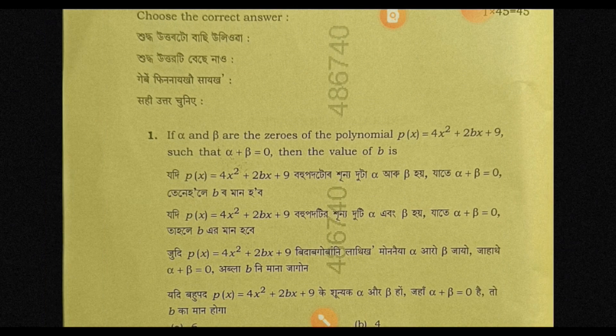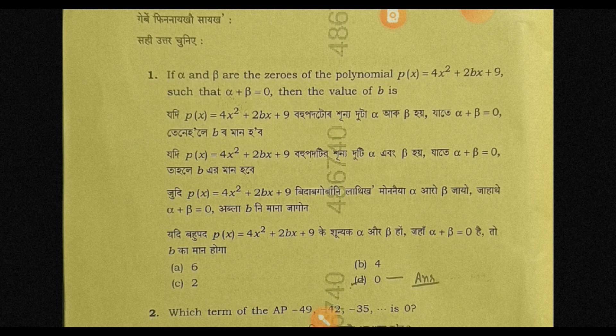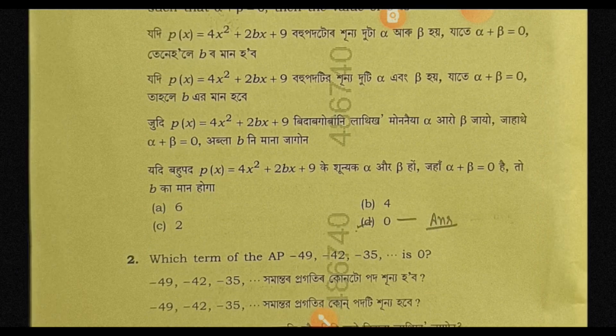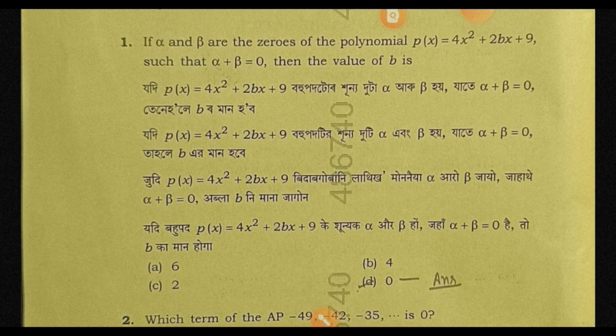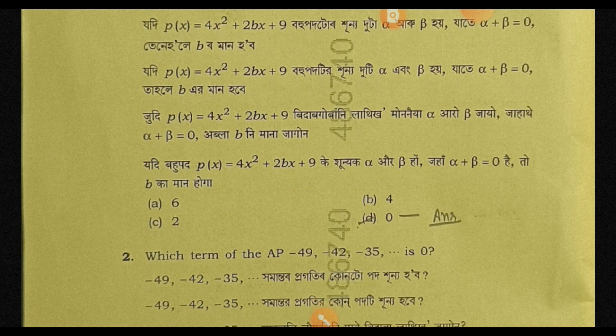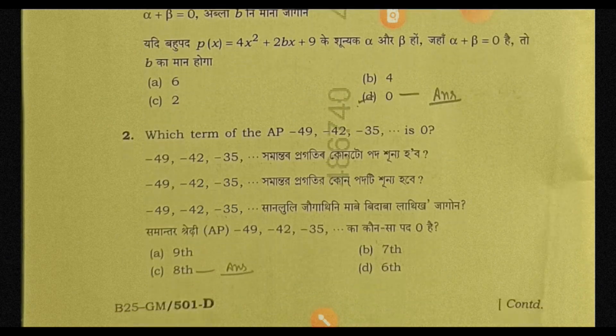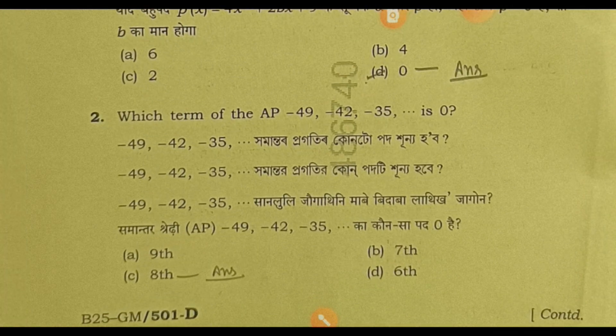The first question: if p(x) equals 4x² plus 2bx plus 9, where alpha plus beta equals 0. The first answer is option D.